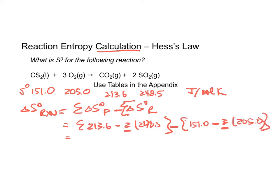What you will do, I guess I would call it plug it and chug it. You will come up with 710.6, and that will be subtracted from 766.0. So you will end up with a negative 55.6 joules per mole Kelvin.